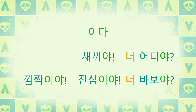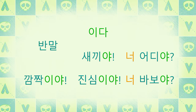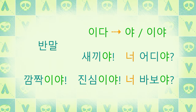For the rest of these phrases, they're conjugated in the casual level of speech, 반말. So 이다 in 반말 would be conjugated either to 야 or 이야. If Noun B ends in a vowel, 이다 is conjugated into 야. If Noun B ends in a consonant, 이다 is conjugated into 이야. So 새끼 ends in a vowel, so you add 야 — 새끼야. And 깜짝 ends in a consonant, so you add 이야 — 깜짝이야. 진심 ends in a consonant — 이야 — 진심이야.